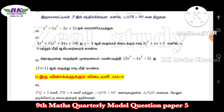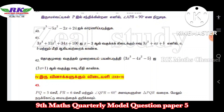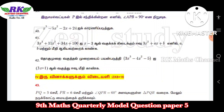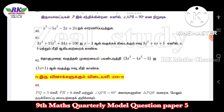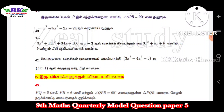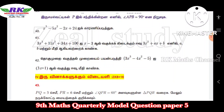Question number 42: 3x³ minus 4x² minus 5x plus 1 — use synthetic division to find the remainder and quotient.